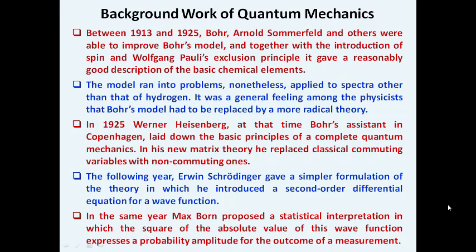It was the general feeling among physicists that Bohr's atom model had to be replaced by a more radical theory. In 1925, Werner Heisenberg, who was the assistant of Bohr in Copenhagen, laid down the basic principles of a complete quantum mechanics. In his new matrix theory, he replaced classical commuting variables with non-commuting ones. In the following year, Erwin Schrödinger gave a simpler formulation introducing a second-order differential equation for a wave function.